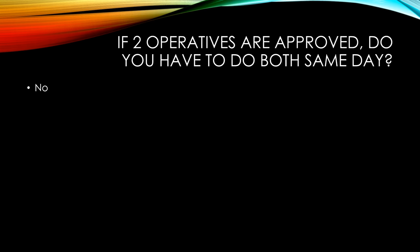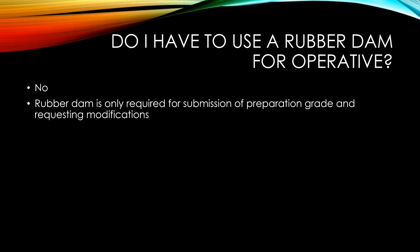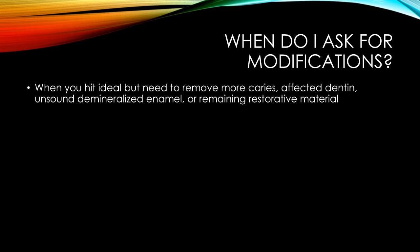If two operatives are approved, do you have to do both the same day? No. Do you need a rubber dam for operative? Interestingly, no. The only time you need a rubber dam is when you send the patient in for grading for the preparation only, and when you request modifications. Otherwise, it's up to your discretion. When do you ask for modifications? Once you hit ideal. If there's any remaining caries, affected dentin, unsound demineralized enamel, or remaining restorative material, you're allowed to ask for extensions for those four items only. Everything else you don't touch.